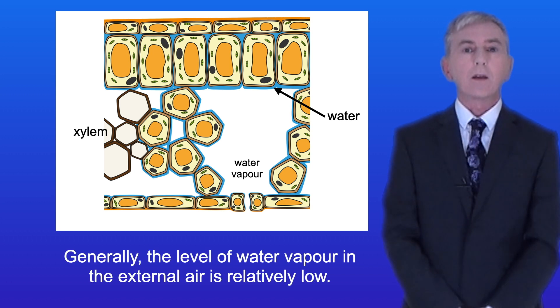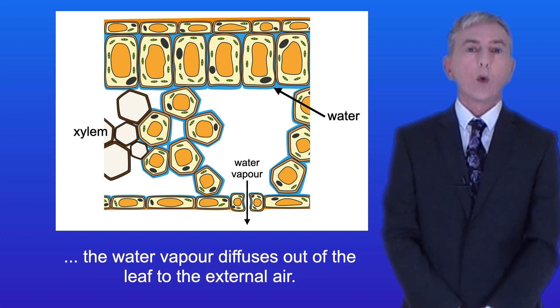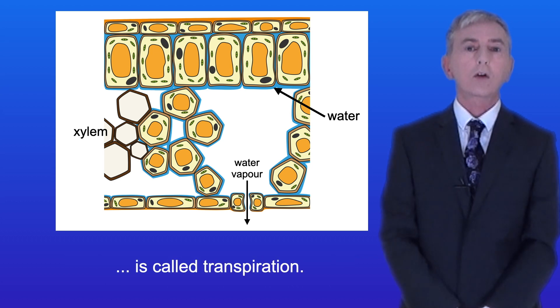Now generally the level of water vapor in the external air is relatively low, so when the stomata are open the water vapor diffuses out of the leaf to the external air, and this evaporation of water followed by the diffusion of water vapor is called transpiration.